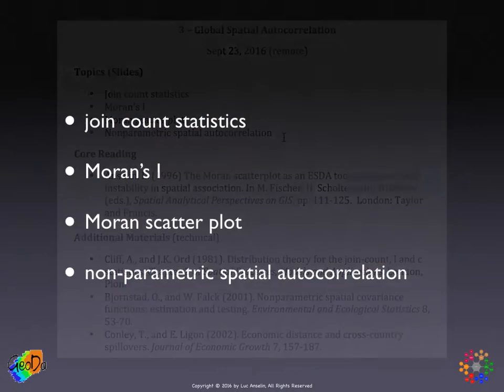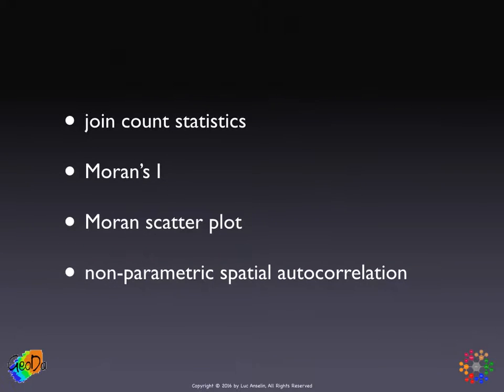So the overview of today is: first, joint count statistics; then Moran's I; then the Moran scatter plot; and finally, non-parametric spatial autocorrelation.